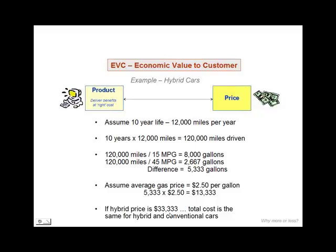When they do, the total cost of operation and fuel for the hybrid and conventional cars are exactly equal. Now, that begs the question: why would any rational buyers in the marketplace pay either more than $33,333, or be unwilling to pay that much — that is, pay only a lesser amount for the hybrid? Why would some pay more and why would some pay less?